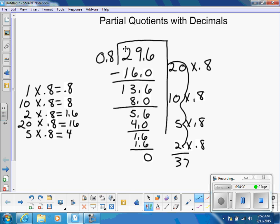We combined all of our groups of 8 tenths, all the groups we used, for a total of 37. So another way to write that is 29 and 6 tenths divided by 8 tenths is equal to 37. That would be 37 groups of 8 tenths.